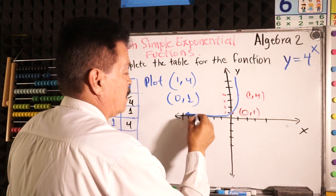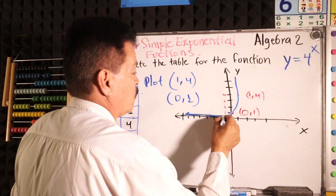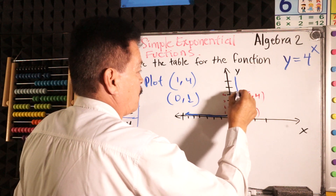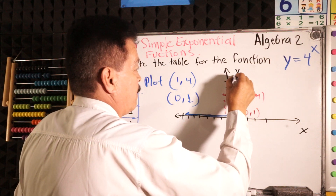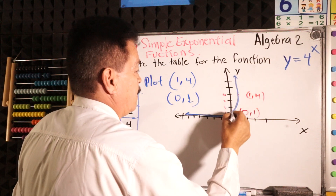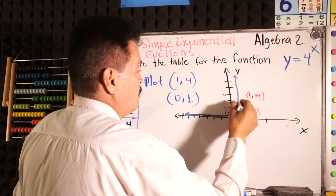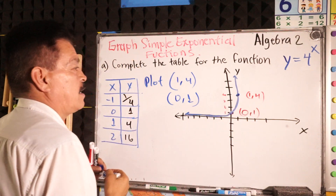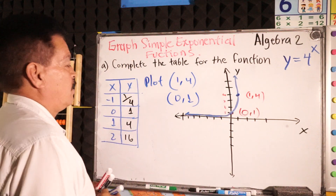Our graph is running in this way — all the way like this. It is a function. We have this point right here and another point right there.